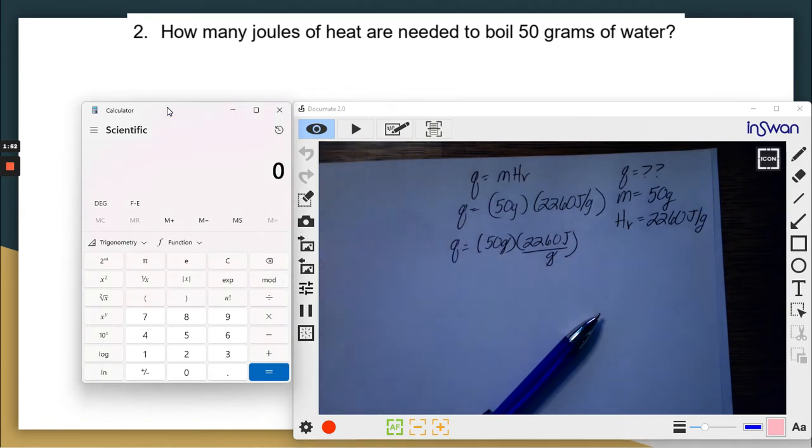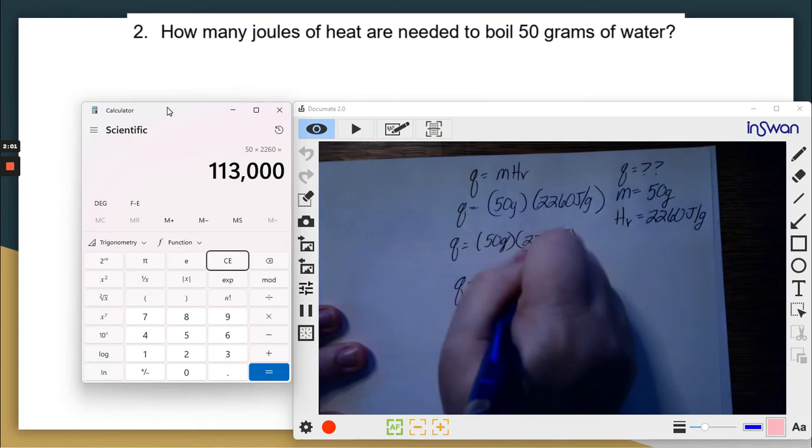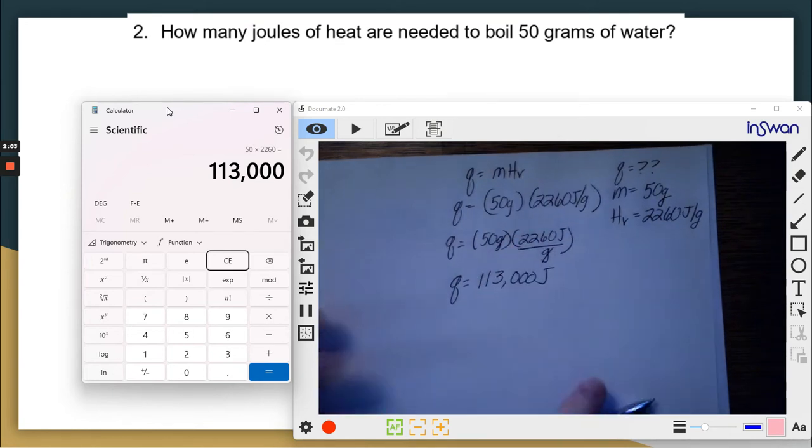50 times 2,260. Q is 113,000 joules. Voila. All right. Let's look at the next one.